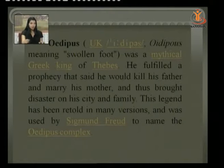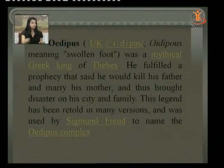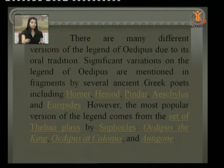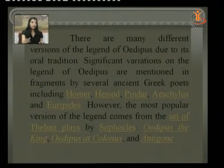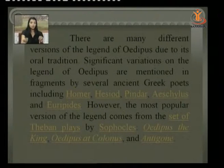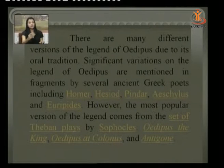This legend was retold in many versions and was used by Sigmund Freud to name the Oedipus complex, a psychological term. There are many different versions due to its oral tradition, mentioned in fragments by Greek poets including Homer, Hesiod, Pindar, Aeschylus, and Euripides. However, the most popular version comes from the set of Theban plays by Sophocles — a trilogy: Oedipus the King, Oedipus at Colonus, and Antigone. The first, Oedipus the King, is our primary concern.